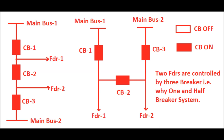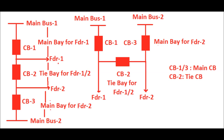Since two feeders are controlled by three circuit breakers, this system is called the one and half breaker system. CB1 and CB3 are the main bus side circuit breakers. CB1 is the main bus 1 side circuit breaker and CB3 is the main bus 2 side circuit breaker. The portion between feeder 1 and main bus 1 is called the main bay for feeder 1, and the portion between feeder 2 and main bus 2 is called the main bay for feeder 2. The portion of the bay in between feeder 1 and feeder 2 is called the tie bay, and the circuit breaker connected between feeder 1 and feeder 2 is called the tie circuit breaker or tie CB.